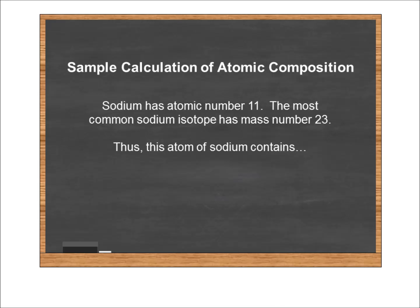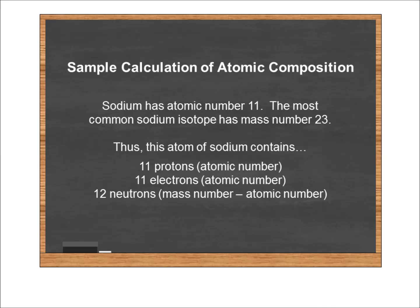Let's do another quick example. Sodium has atomic number 11, and the most common isotope of sodium has mass number 23. So this atom of sodium contains 11 protons from its atomic number, 11 electrons from its atomic number, and 12 neutrons, 23 minus 11.